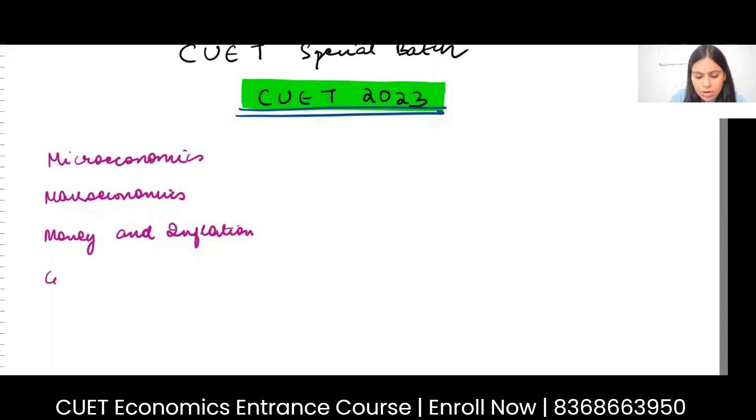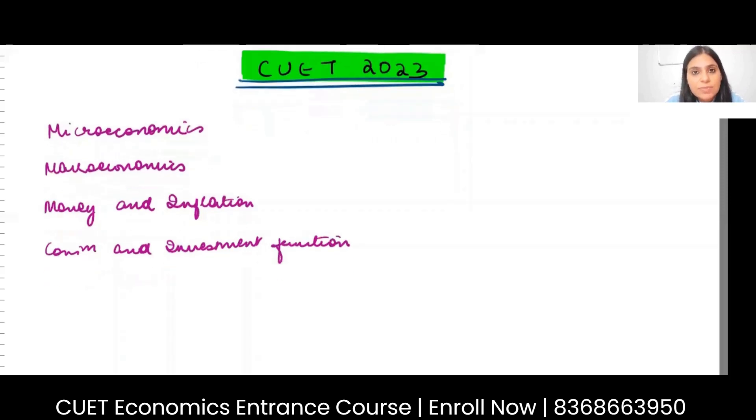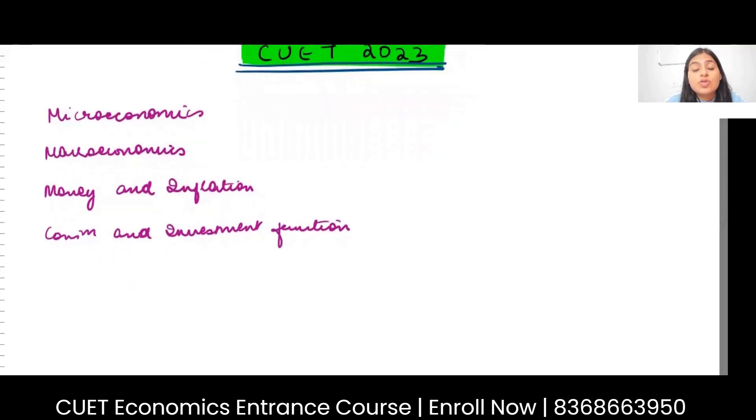Then we will be talking about consumption and investment function, in which we will be talking about different theories: Q theory, the permanent income hypothesis, the life cycle hypothesis. Then we will be talking about open economy models, and then the growth models.